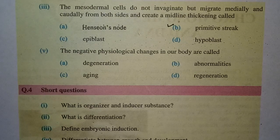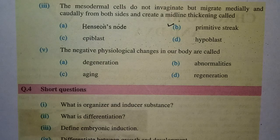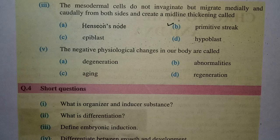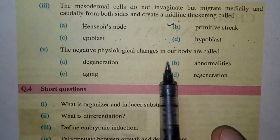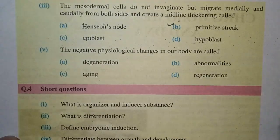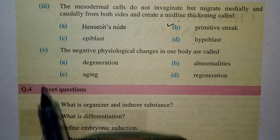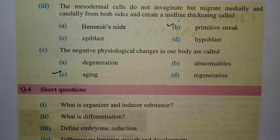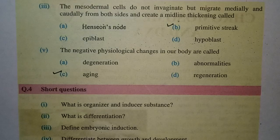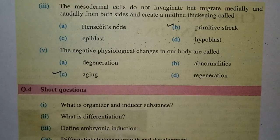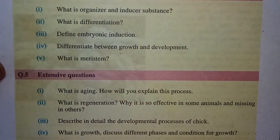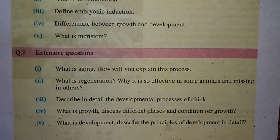The last MCQ: the negative physiological changes in our body are called — the options are aging, degeneration, abnormalities, and regeneration. Aging is the right option.